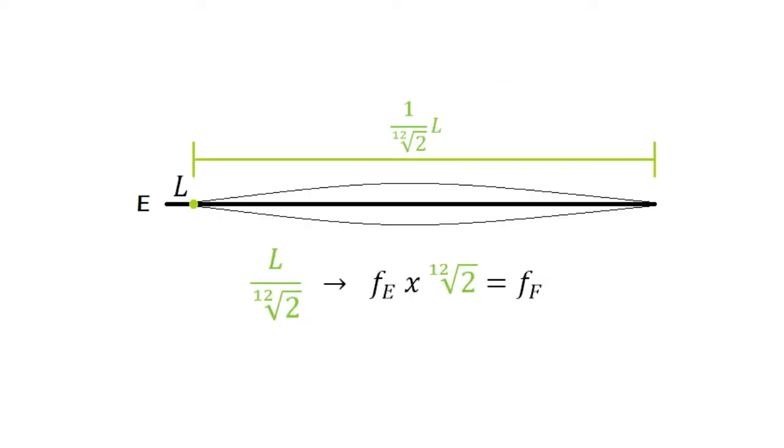So if the vibrating portion of the string is divided by the 12th root of 2, then the frequency is multiplied by the 12th root of 2, giving us a semitone increment.